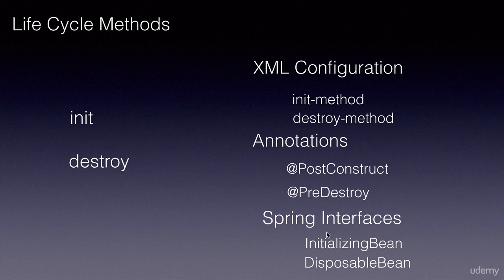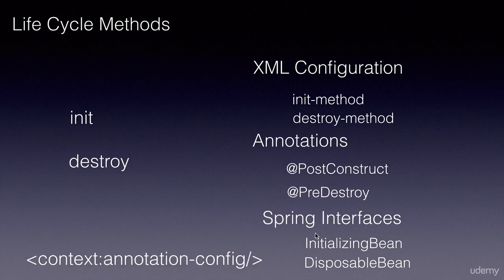When we use annotations, by default Spring annotation support is disabled. To enable it, we use context:annotation-config. You first configure the context namespace in your XML configuration and use this one single line to enable annotations.